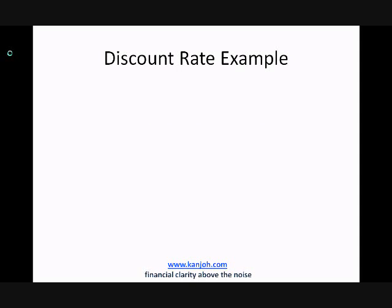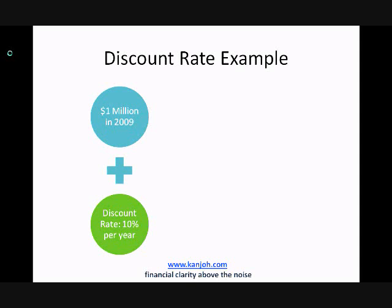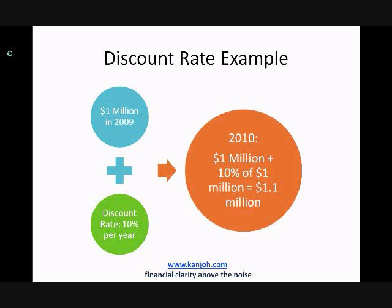So let's go back to our lottery example. We got $1 million in 2009, and we have a discount rate of 10% per year. We can now determine that in 2010, we'll have $1 million plus 10% of $1 million, based on the 10% discount rate, which equals $1.1 million. So what we can infer is that with a 10% discount rate, $1 million in 2009 is going to equal $1.1 million in 2010. That's really all there is to time value of money and discount rates.